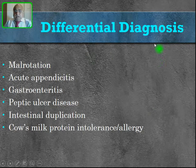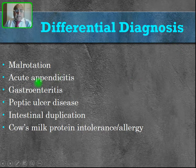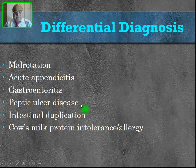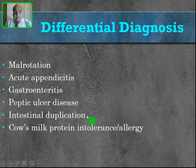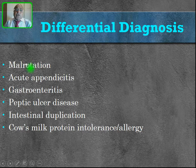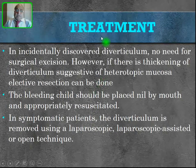The differential diagnoses for Meckel's diverticulum include malrotation, acute appendicitis, gastroenteritis, peptic ulcer disease, intestinal duplication, and sometimes cow's milk protein intolerance or allergy. All these must be kept in mind when evaluating a suspected case.